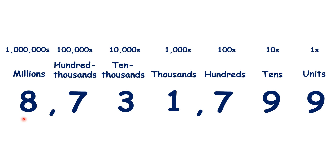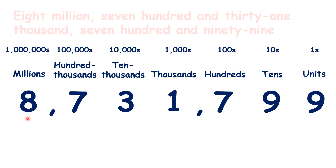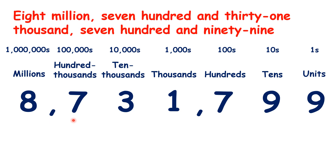What number do we have here? We have 8,731,799. We know that we usually have a space or a comma to separate our thousands and our hundreds. We also usually have a space or comma to separate our millions and our hundred thousands. And this makes it easier for us to read large numbers.